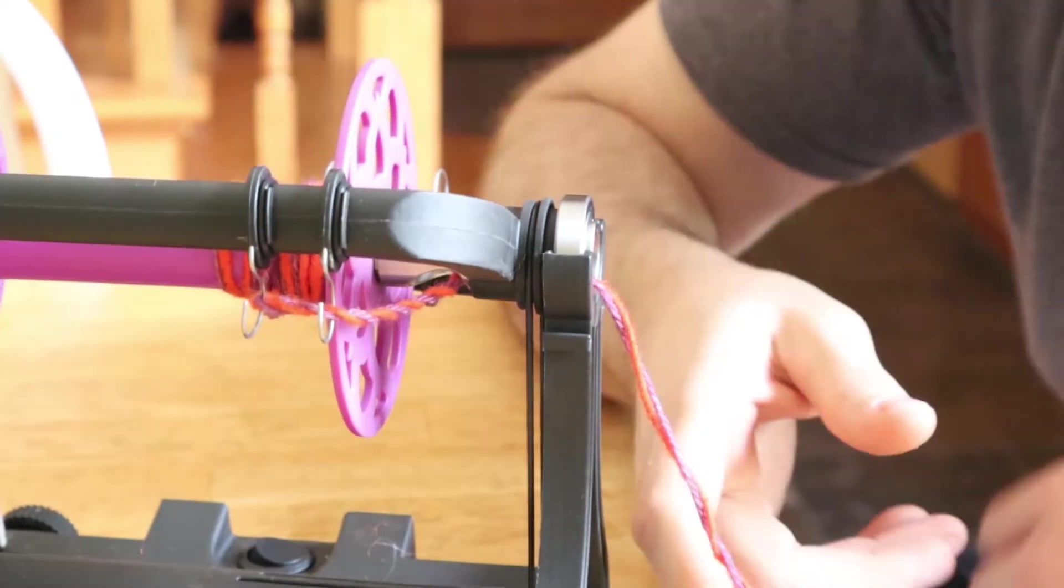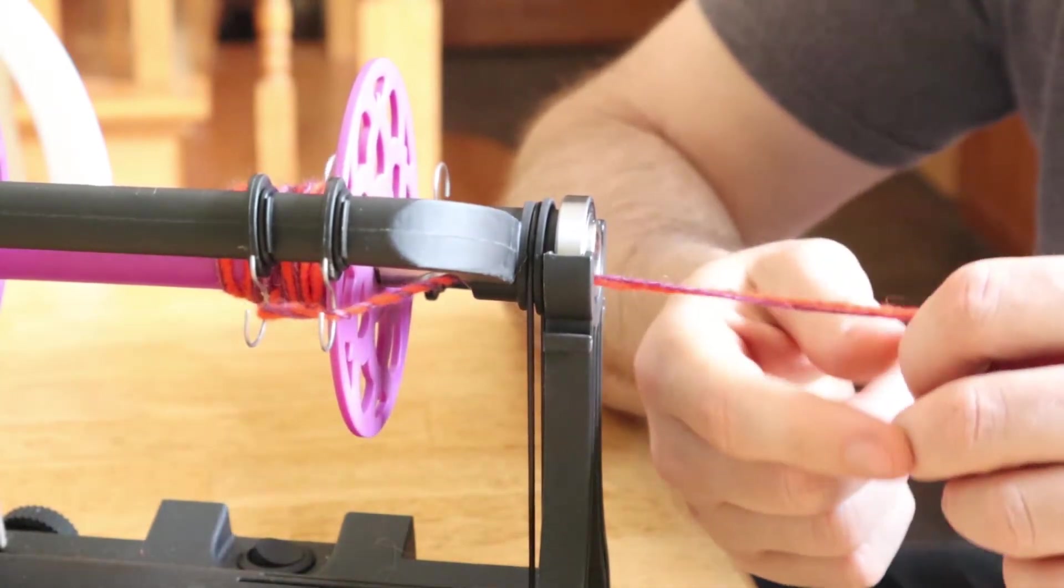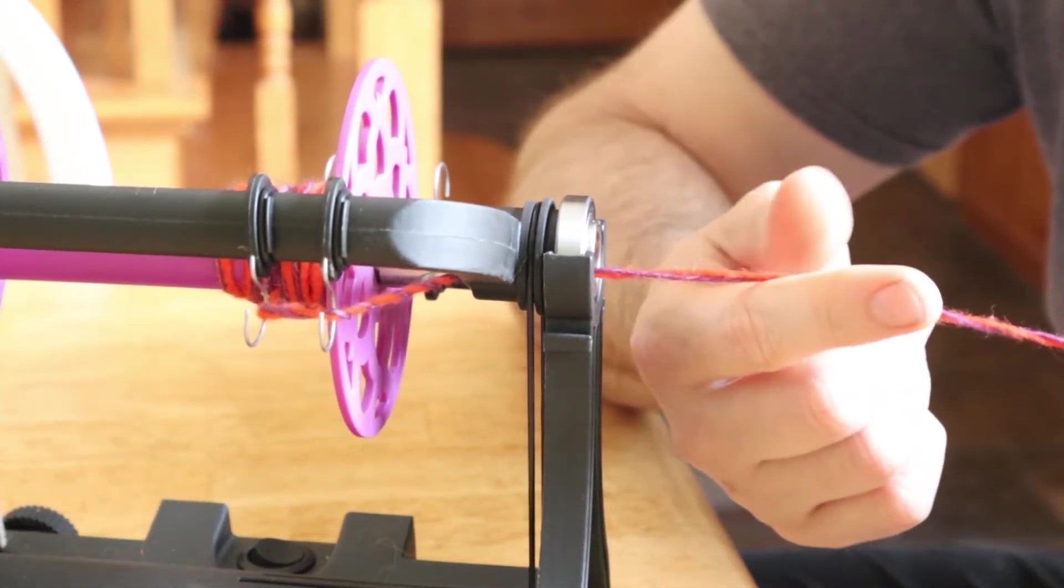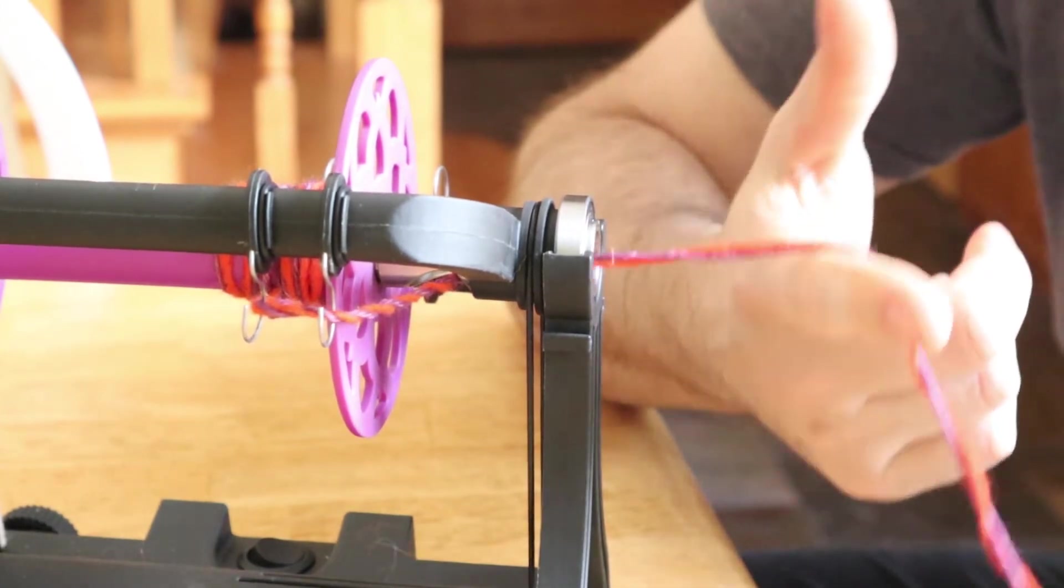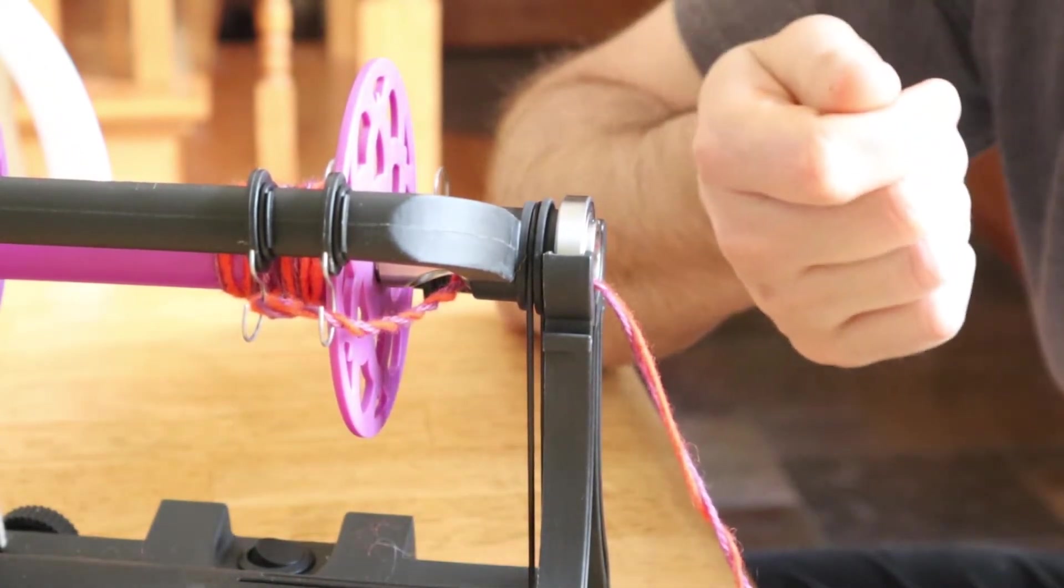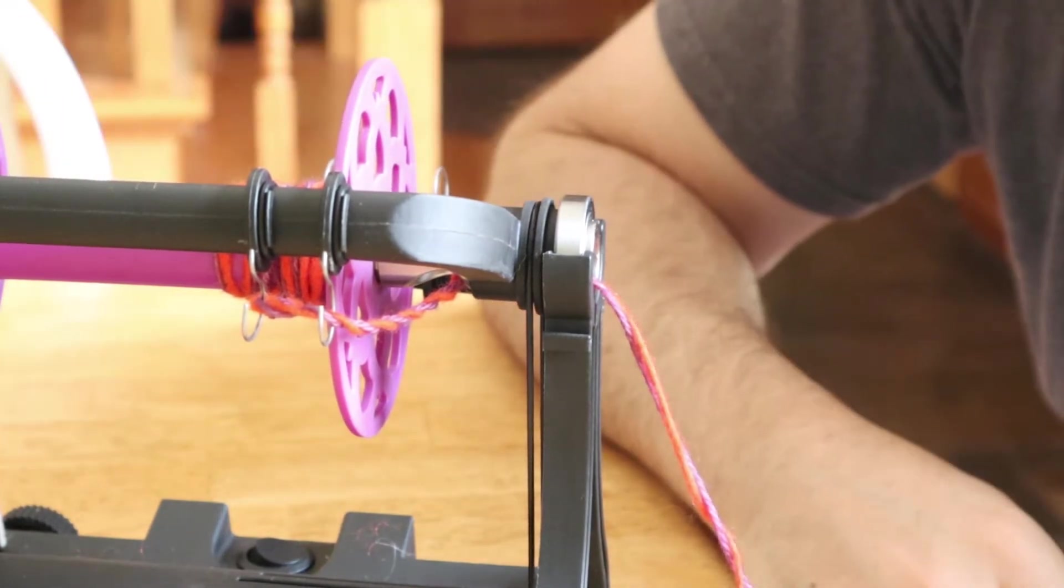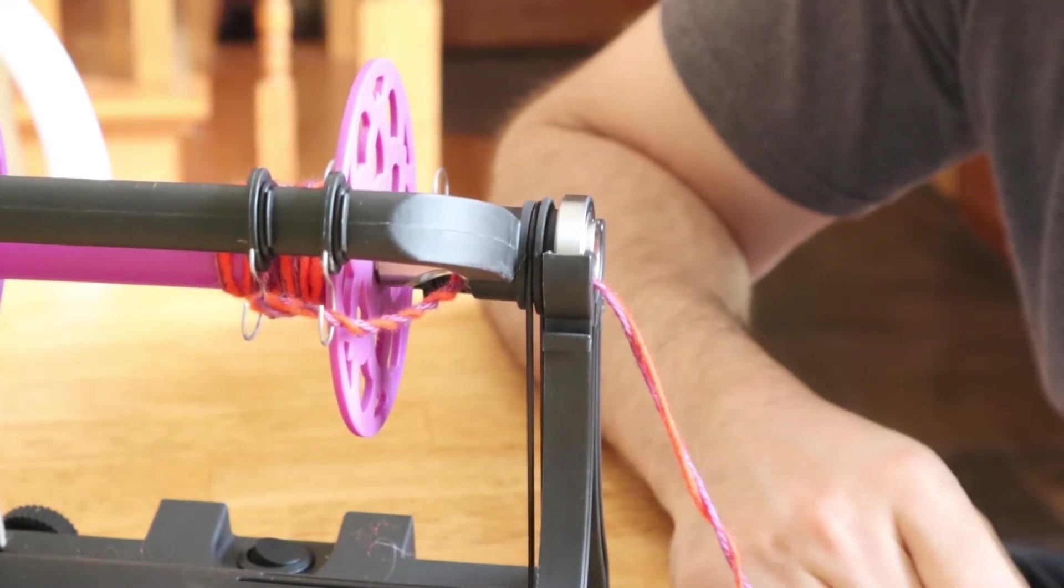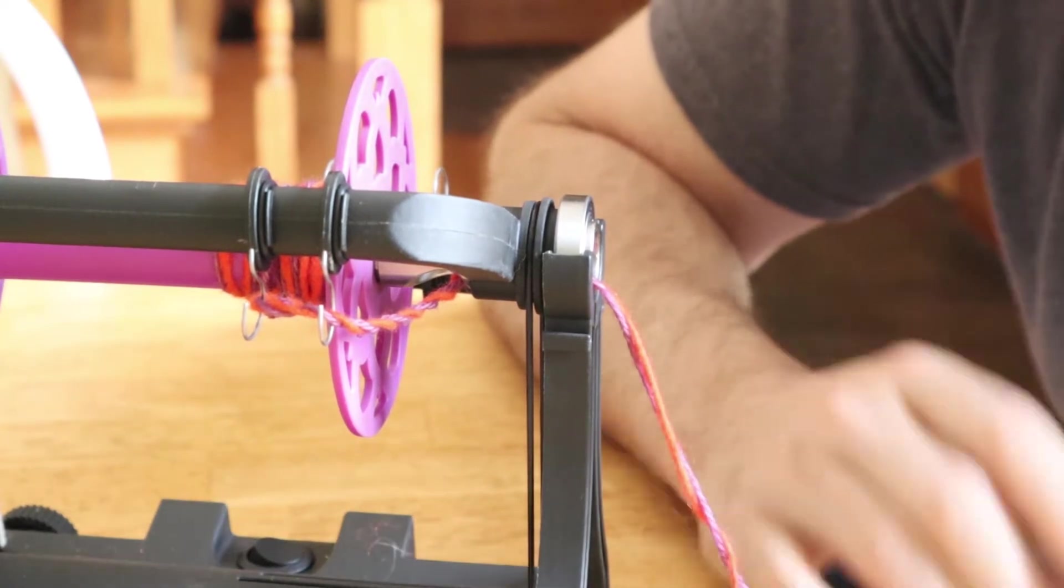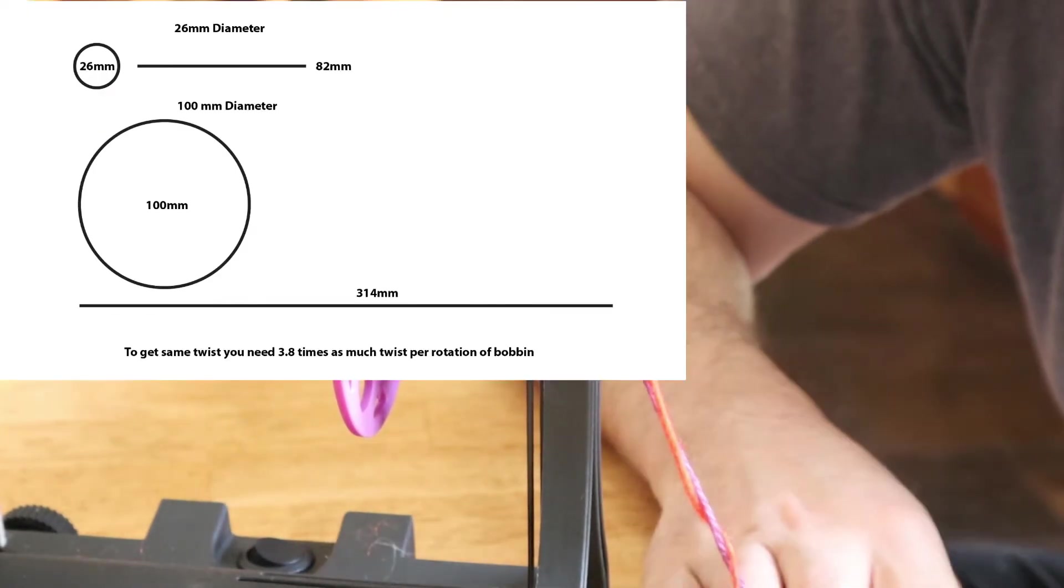But with an e-spinner if you're not adjusting the tension as the bobbin fills up then you're just adjusting how you let the yarn out of your hand because there's definitely going to be more and less pulling required as the bobbin fills up if you want to keep your yarn consistent. So I hope that makes sense to people. I've got a few diagrams that I'll put on the screen that show the difference in length.